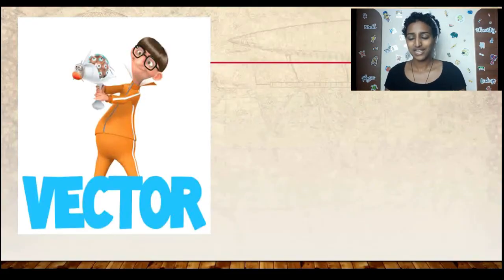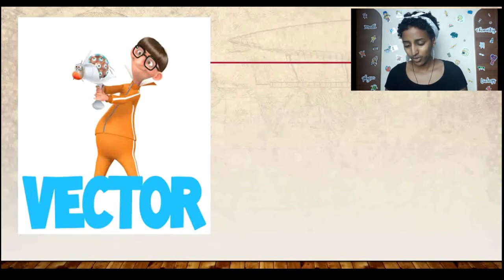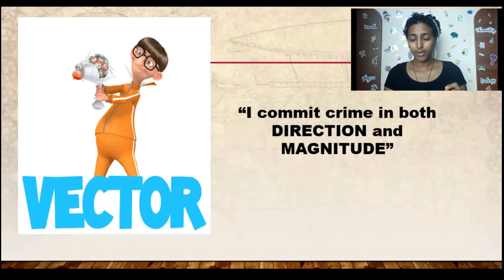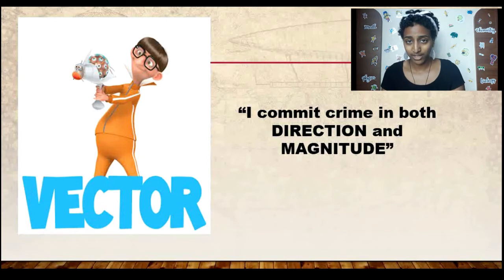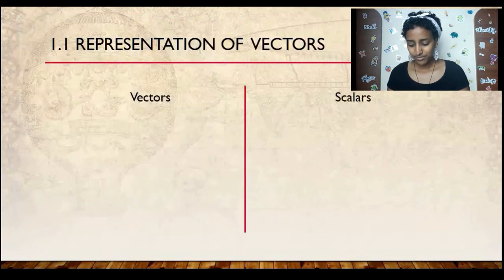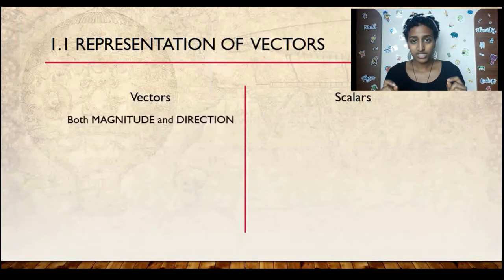Now to explain why his name is Vector, he says this, and I quote, I commit crime in both direction and magnitude. When I watched this when I was younger, that made no sense to me. But now I realize that he's actually defining what a vector is. He's saying it in crime, but in physics, the definition of vector is a quantity that has both magnitude and direction.